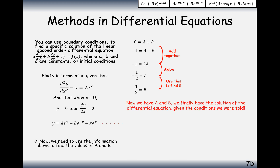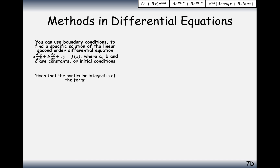So the final answer to this question, including the constants of integration, is: y equals minus one half x·e to the x, plus one half e to the minus x, plus x·e to the x. Lovely — that's all we need for exercise 7D.